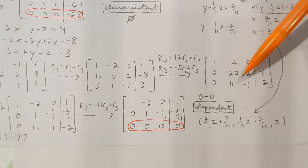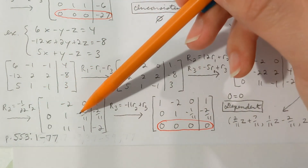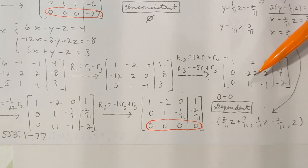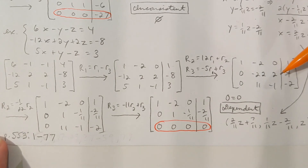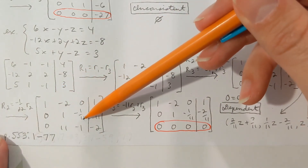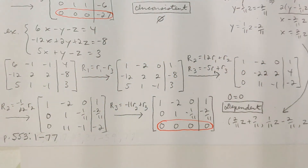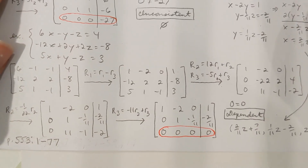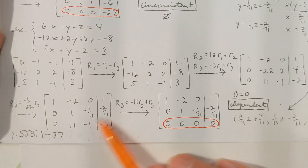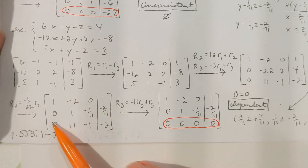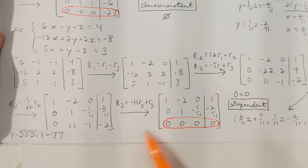The next thing is to get a 1 in the middle of the matrix — right now it's a negative 22. Multiplying row 2 by negative 1/22: 0, 1, negative 1/11, negative 2/11. Below this 1 in the middle, I need a 0 — right now it's 11. I don't want to touch row 1 and disturb the existing zeros. If I take negative 11 times row 2 plus row 3, I'll get the 0 I need while keeping the 0 leading off.